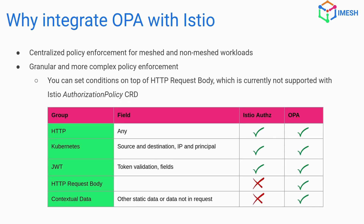Why would you want to integrate it? You get centralized policy enforcement — anywhere you have Istio you will be able to have your authorization policy set in, even if it is not part of the mesh, or if requests come through ingress or egress gateway. The Istio authorization policy can do quite a lot in the authorization phase: matching on HTTP fields, JWT fields, or just basic token validation.